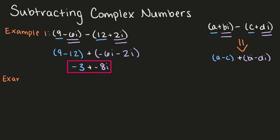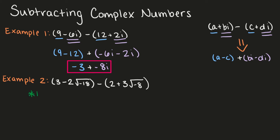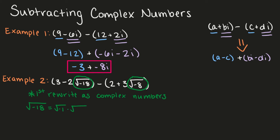Let's take another example. We have 3 minus 2 times the square root of negative 18, minus 2 plus 3 times the square root of negative 8. The first thing we want to do is rewrite these expressions as complex numbers. The square root of negative 18 equals the square root of negative 1 times the square root of 18, which is i times the square root of 9 times the square root of 2. Since 9 is a perfect square, that gives us 3i square root 2.